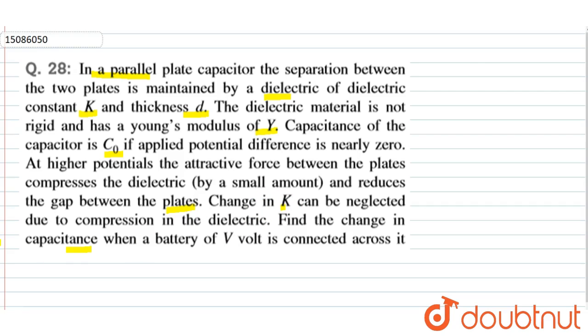So in this case, initially, capacitance C is equal to Kε₀A/d. After adding the dielectric, this is equal to Kε₀A/d, which is C0.